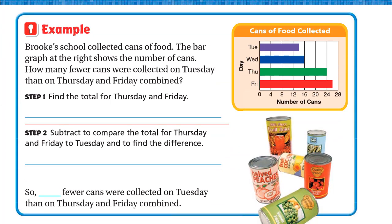Another example: Brook's school collected cans of food. The bar graph shows the number of cans collected. How many fewer cans were collected on Tuesday than on Thursday and Friday combined? Remember, 'combined' means together, so we need to add those days. Then, since we're comparing, we subtract.